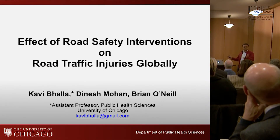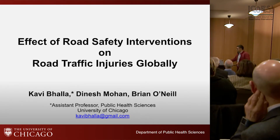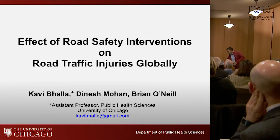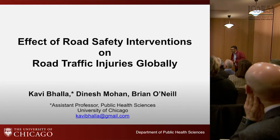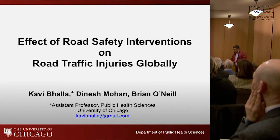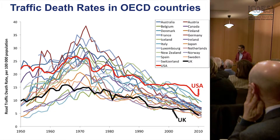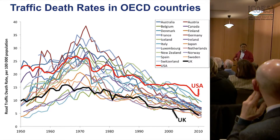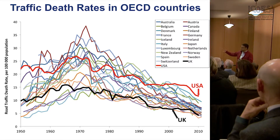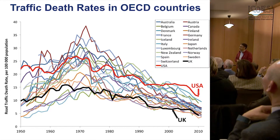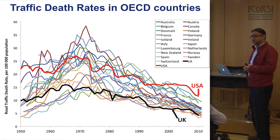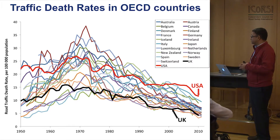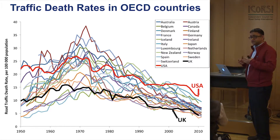My name is Kavi Bhalla, from the University of Chicago. I want to spend the next ten minutes talking about this graph, which shows the history of road safety performance of OECD countries over the last 60 years. This graph has some remarkably special features that are very important for us to grapple with.